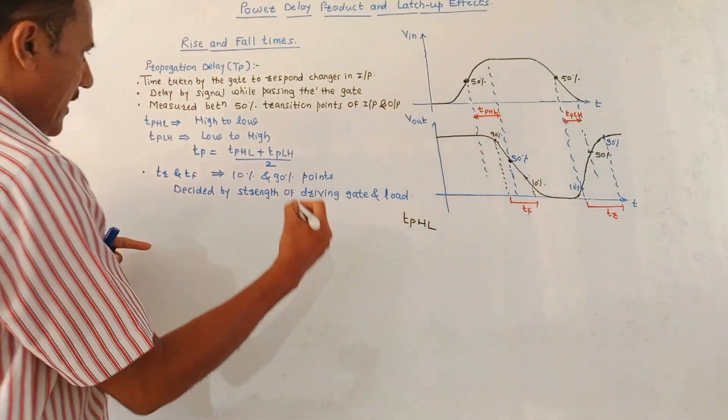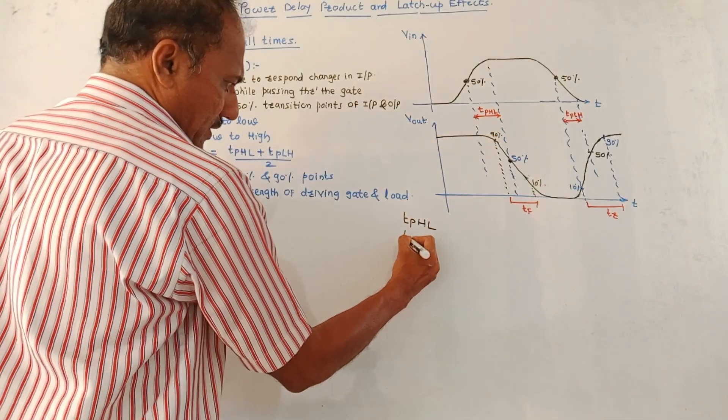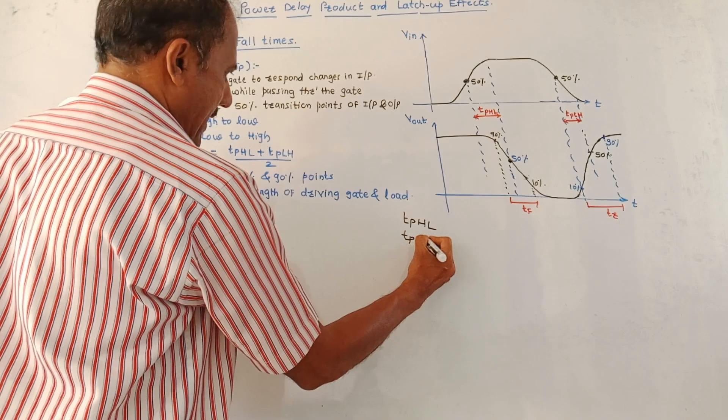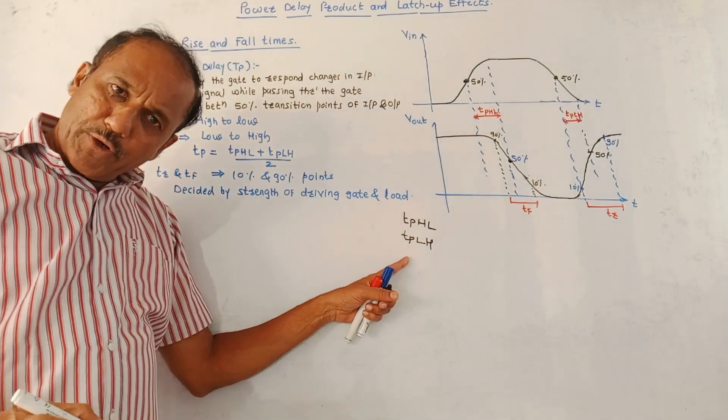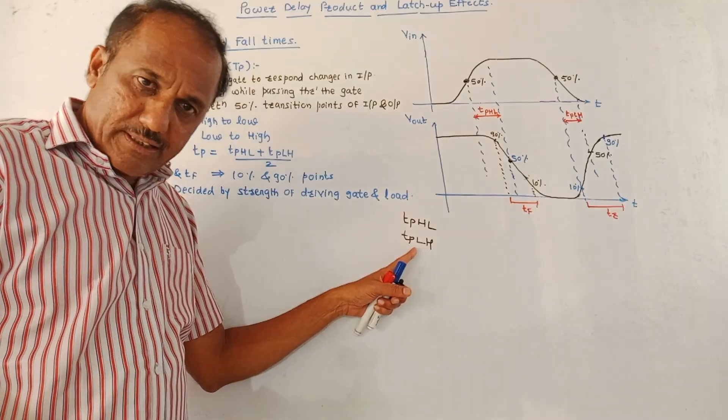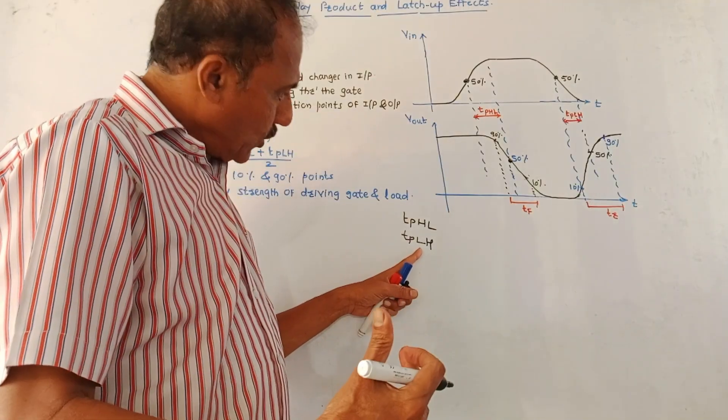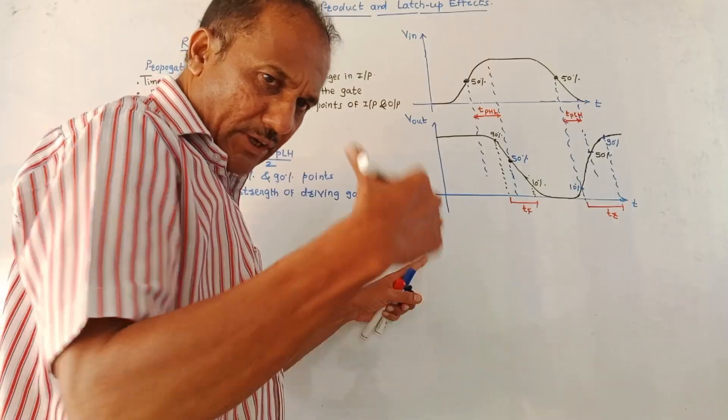On the contrary, another time period, another propagation time is TPLH. As the name indicates, it is the propagation delay when the output is transiting from low level to high level.